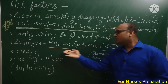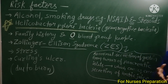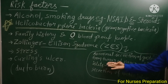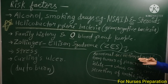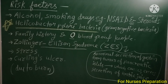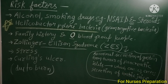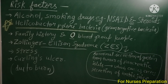Next आता है Zollinger-Ellison syndrome। इसके अंदर pancreatic islets के अंदर tumor का formation हो जाता है। इन tumors से abnormally बहुत ज़्यादा मात्रा में gastrin का secretion होने लगता है। और ज़्यादा gastrin की मौजूदगी के कारण ज़्यादा मात्रा में gastric juice का भी secretion होता है, और इससे Peptic Ulcer हो जाते हैं।